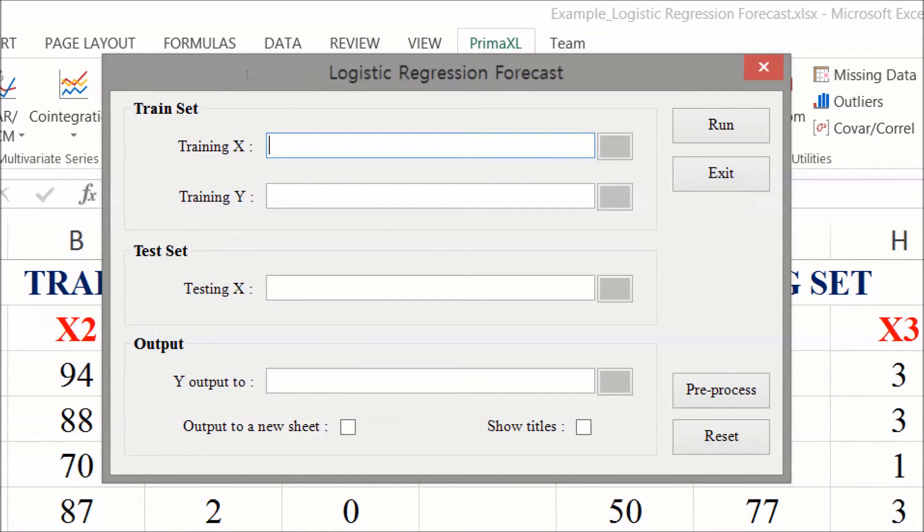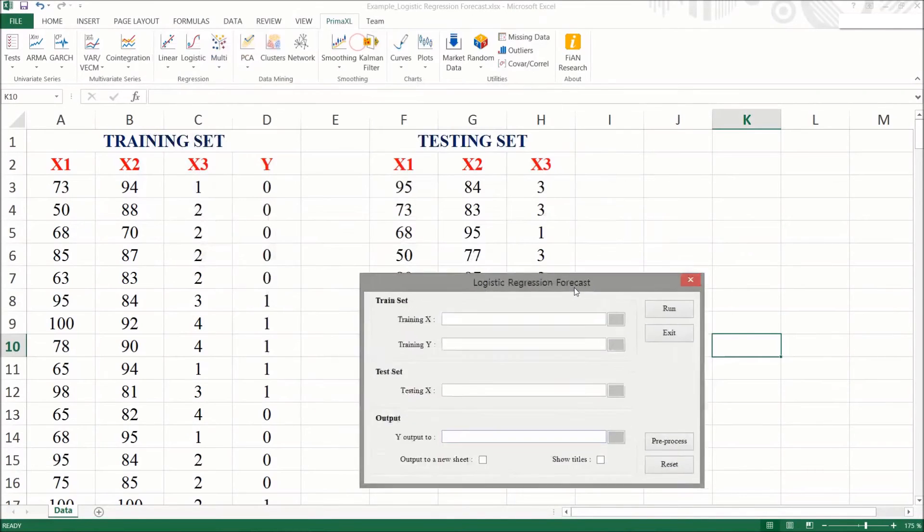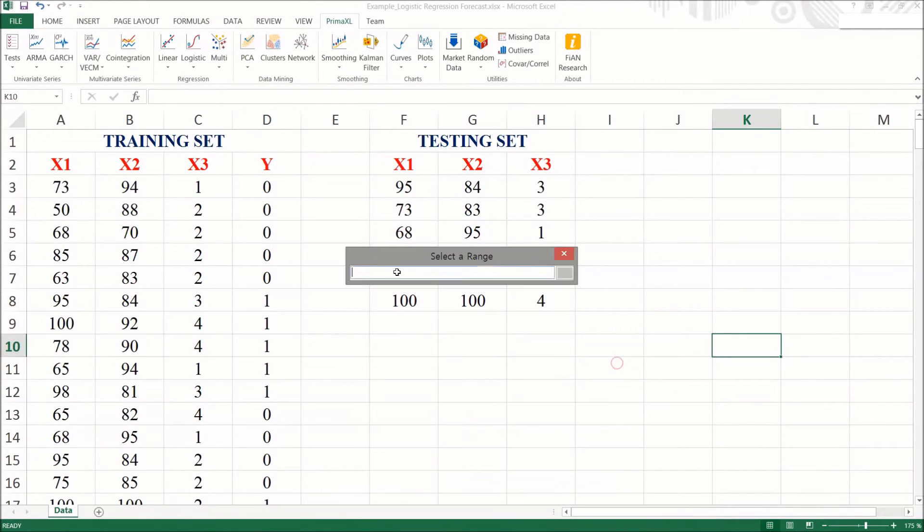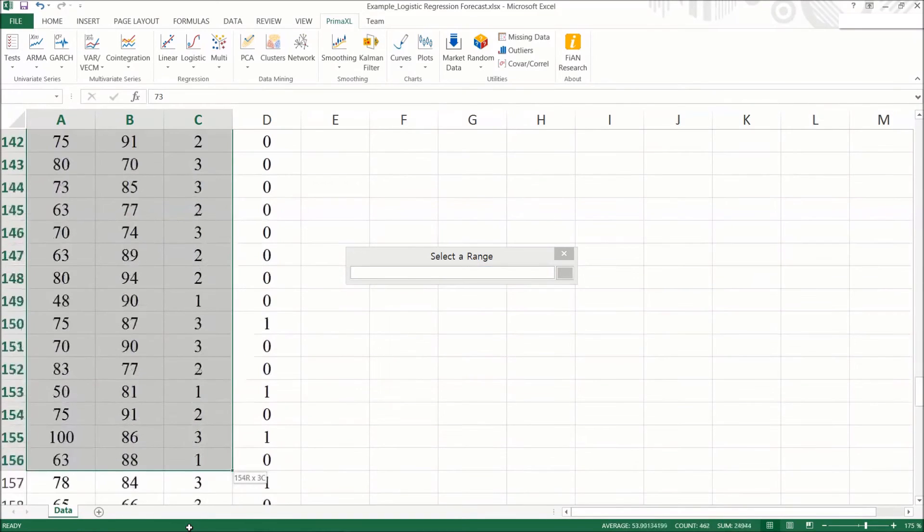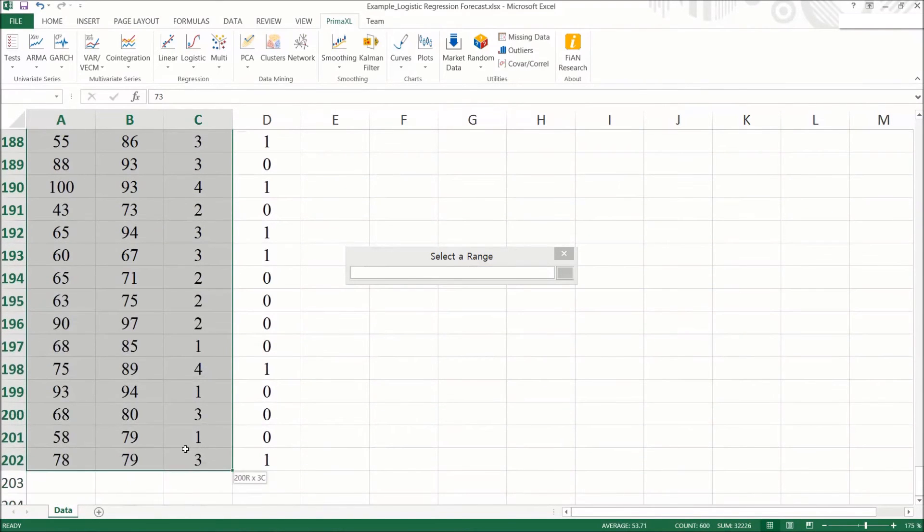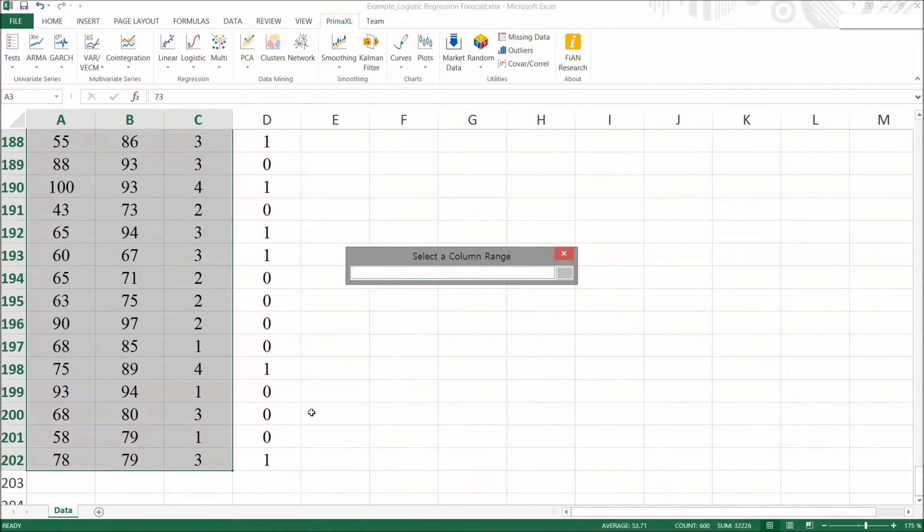This menu form is quite intuitive. At the top, we should specify the data range for the training step. Both x and y should be given. Next, we should specify the data range for the forecasting or testing. Here, we only need the data range for the x. In fact, this would be the x prime. Finally, we should specify where to output the result. This way we can fill out all the blanks with the corresponding ranges.